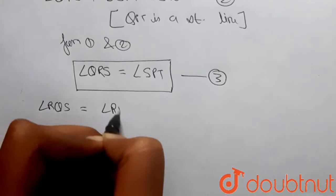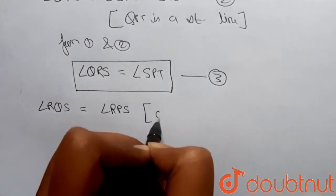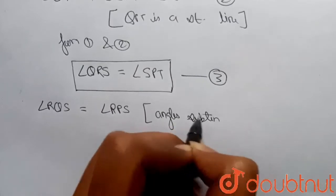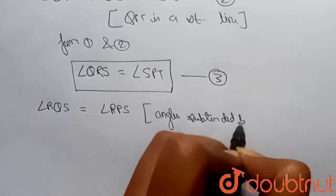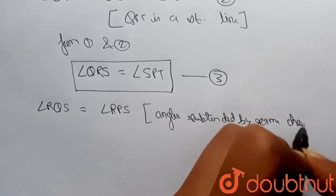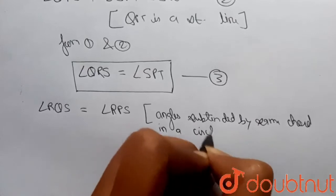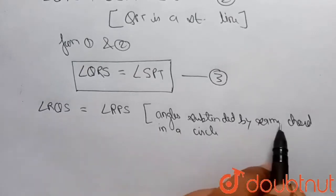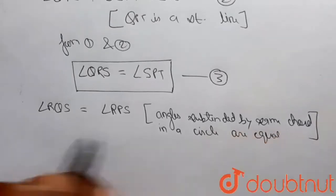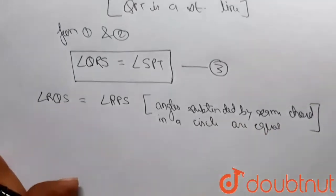Again, I can write that angle RQS is equal to angle RPS because these are the angles subtended by the same chord in the circle. We know that angles subtended by the same chord in a circle are equal. So angle RQS equals angle RPS — let's call this equation four.